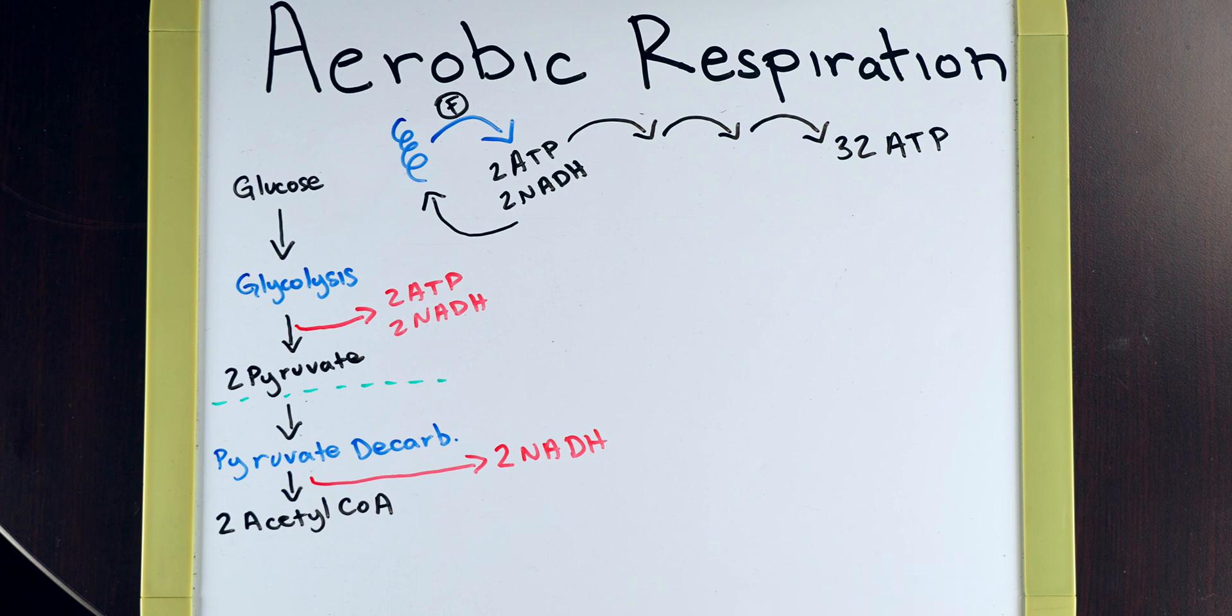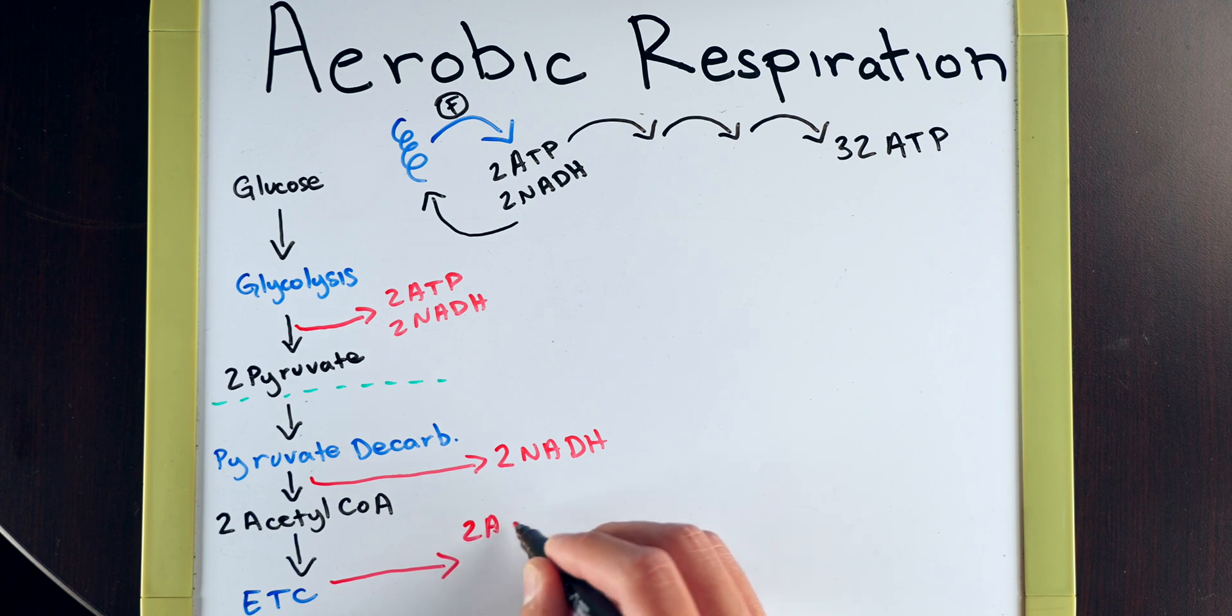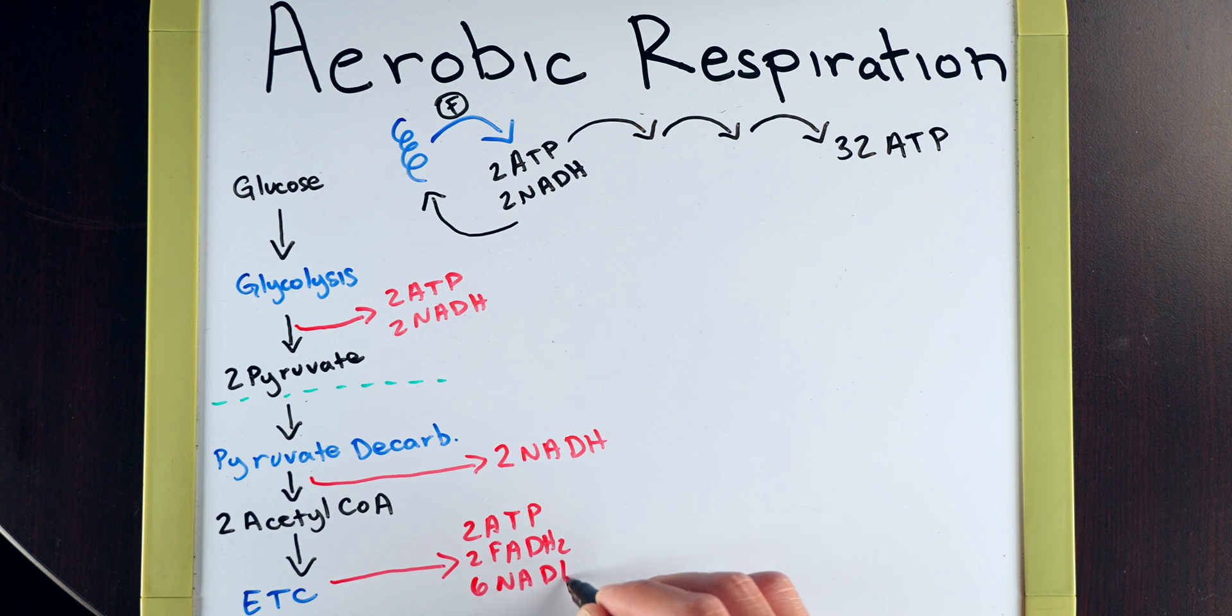Now, lastly, we're going to take our two acetyl-CoA molecules and put it through the last process of the electron transport chain, Krebs or TCA. All of them meaning the same thing. And once our two acetyl-CoA's have fully gone through the electron transport chain, we can expect to get two more ATP, two FADH2, and six NADH.